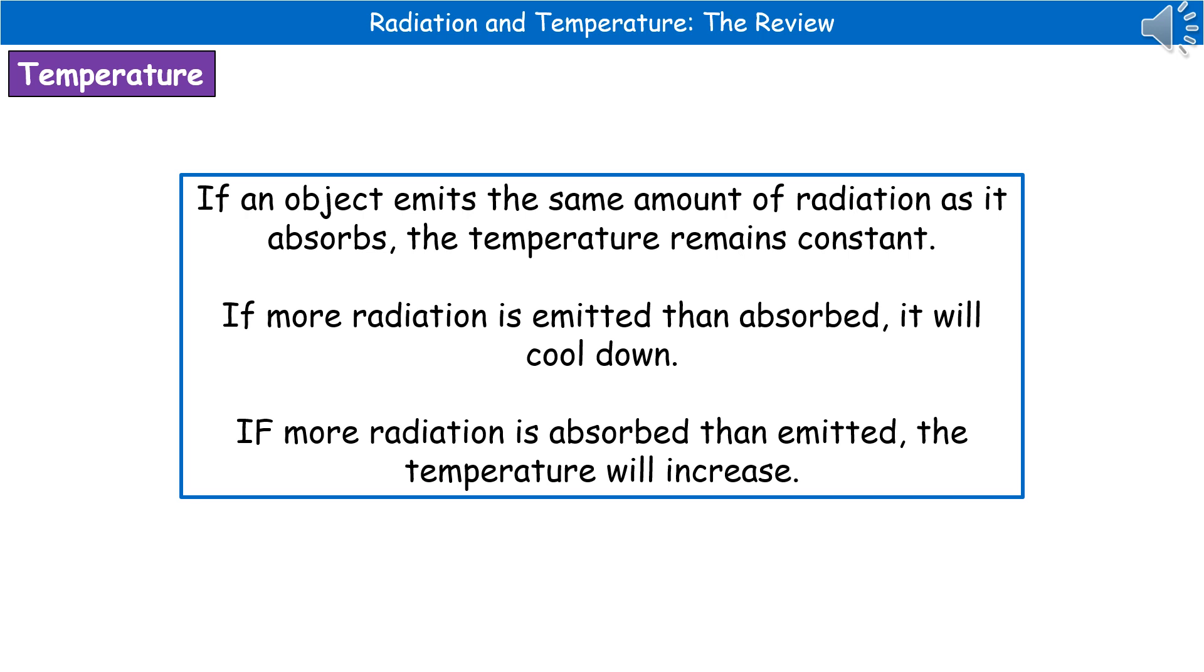We need to know about the link between temperature and radiation. If we've got an object which is emitting the same amount of radiation as it's absorbing, then the temperature of that object will remain constant. However, if it's unbalanced, the temperature will change. If we're emitting more radiation than we're absorbing, then the object is going to cool down. Whereas if more radiation is being absorbed than is emitted, then the temperature of the object will increase.